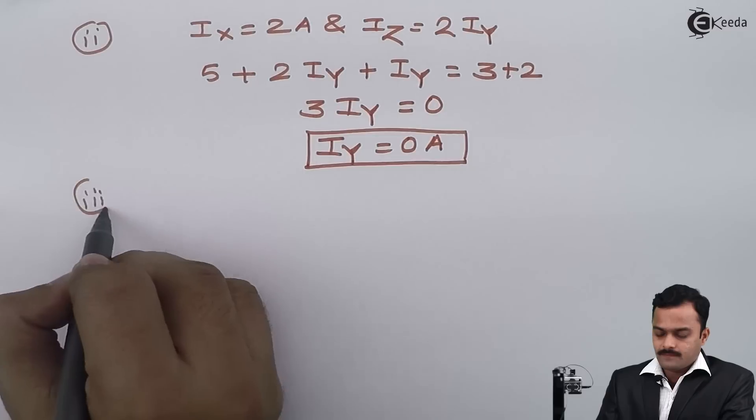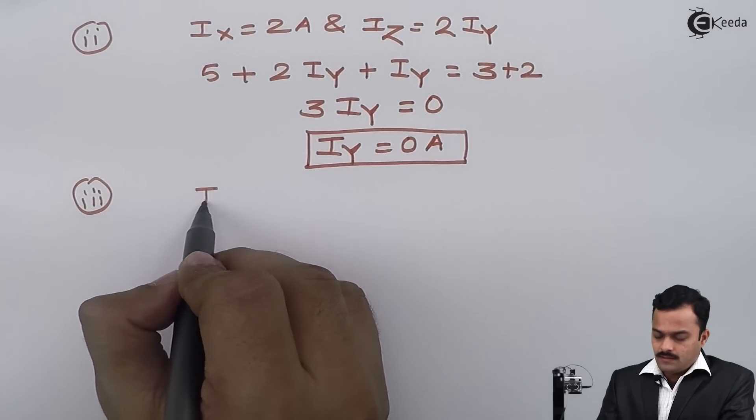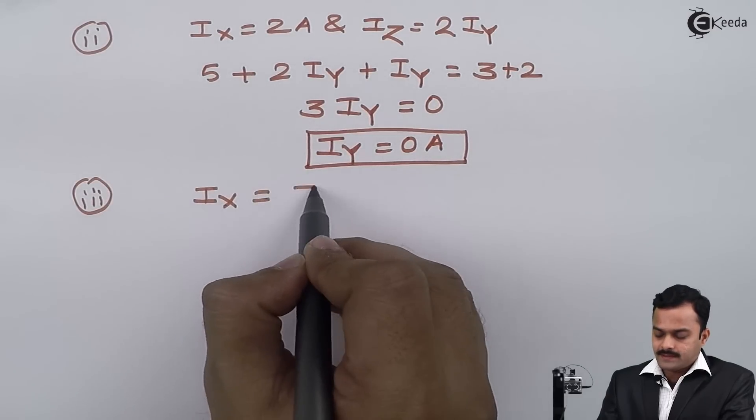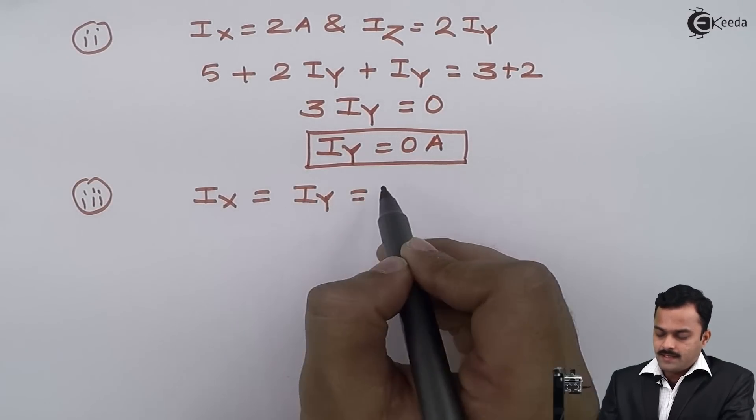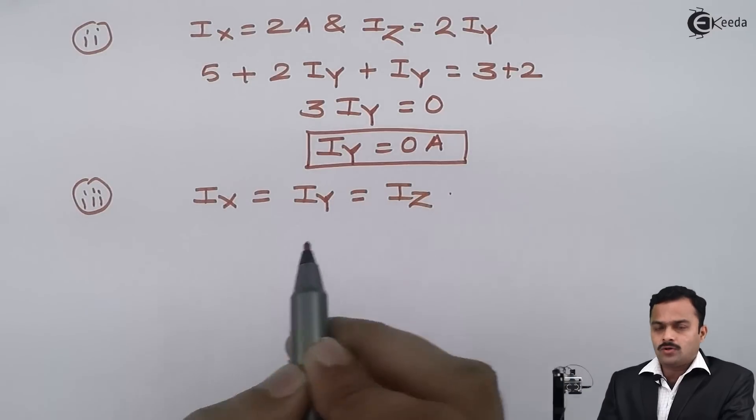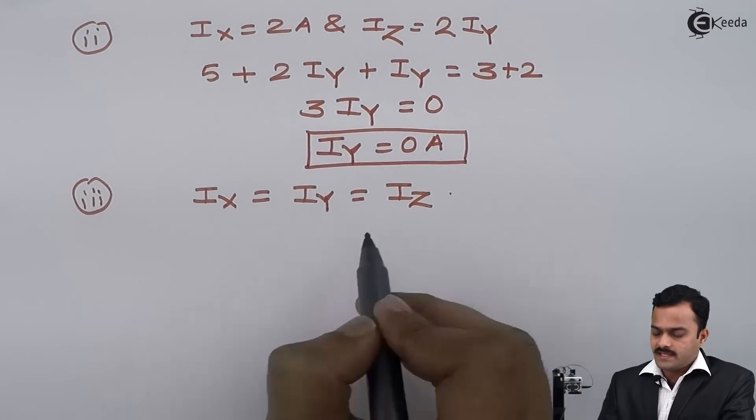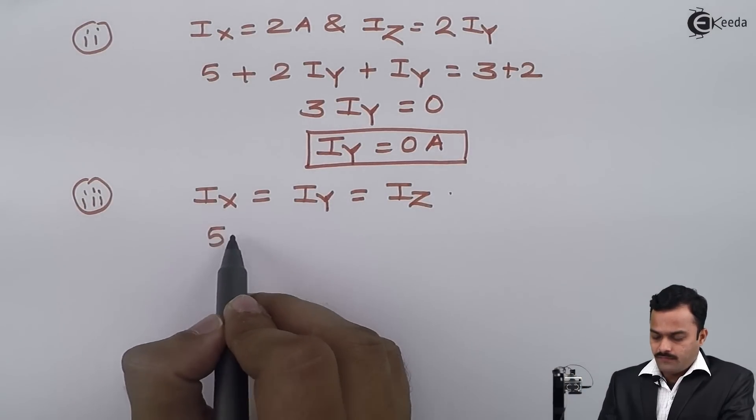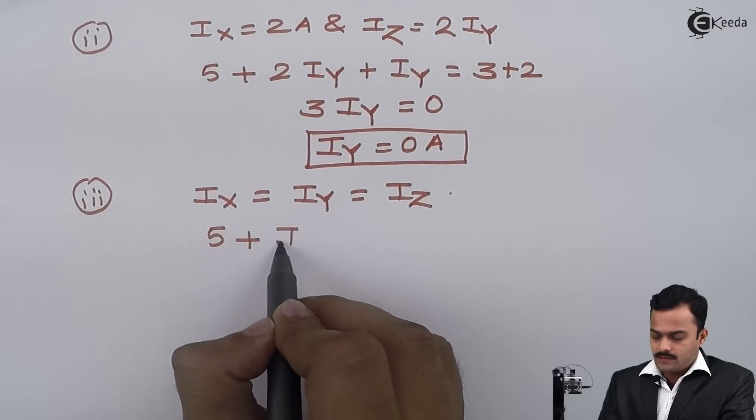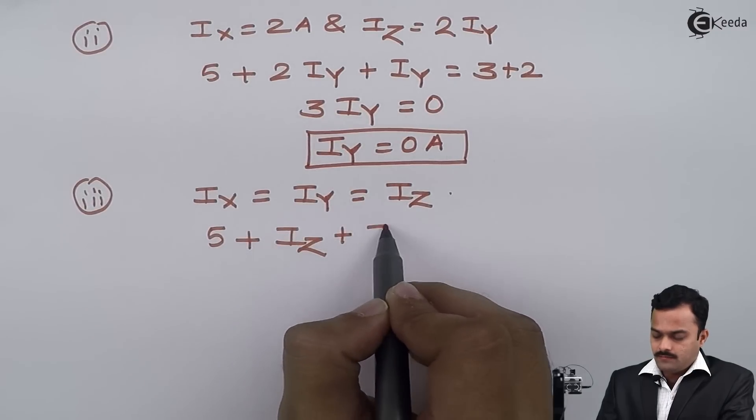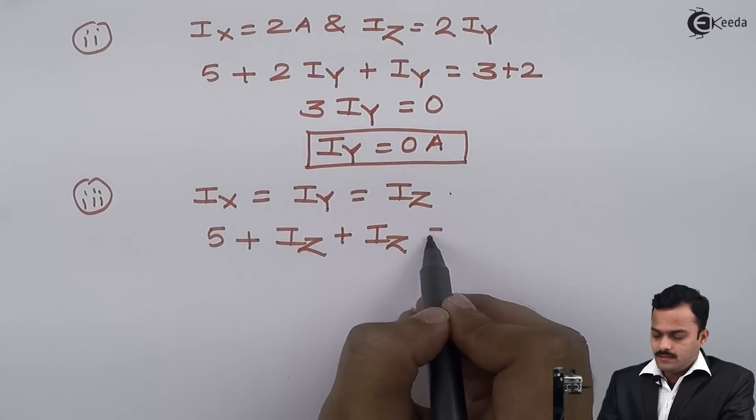And in third case, they are given ix is same as iy is same as iz. So all unknown I will replace by iz.